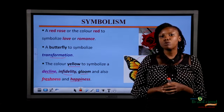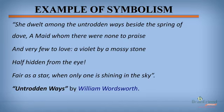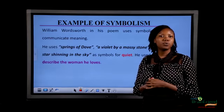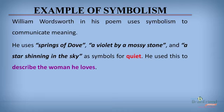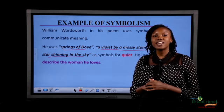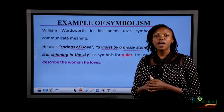Now let's look at some other examples of symbolism. Example 1: 'She dwelt among the untrodden ways besides the spring of Dove. A maid whom there were none to praise, and very few to love. A violet by a mossy stone, half hidden from the eye. Fair as a star, when only one is shining in the sky.' The words used — springs of Dove, a violet by a mossy stone, and a star shining in the sky — all symbolize quietness. He uses these to describe the woman he loves.